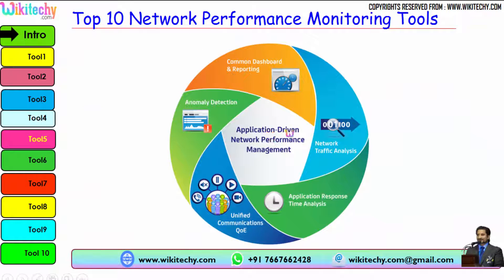Further digging into application-driven network performance management: you should have a dashboard. A network performance monitoring application should have a dashboard, a network traffic analysis tool, and you have to check the response time of the application. Additionally, unified communication quality of experience for users and, finally, anomaly detection — if there is any issue, you have to identify it. These are the key areas that provide effective network performance monitoring and application-driven management.